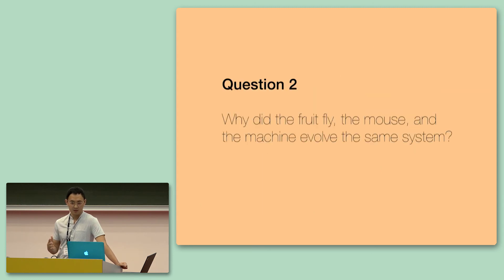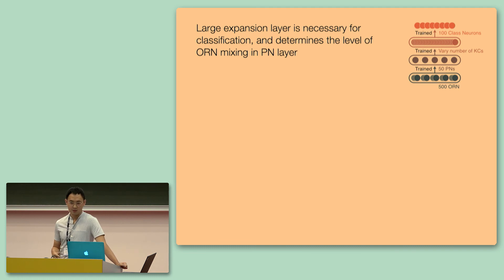So it appears that these motifs, the one-to-one matching between ORNs and PNs, and also the sparse random connectivity is fairly robust. So why did the fruit fly, the mouse, and the machine evolve the same system? The first insight that we have gained by manipulating this system is that a large expansion layer is necessary for odor classification, and also determines the level of ORN mixing in the PN layer.